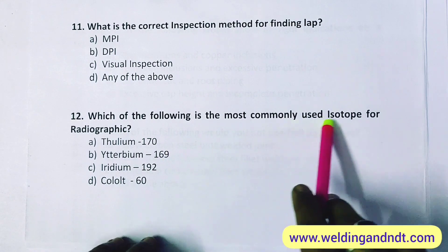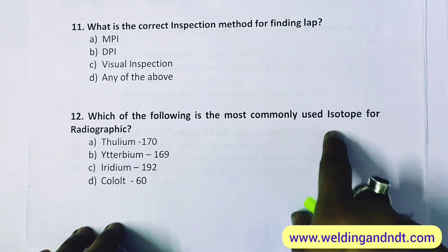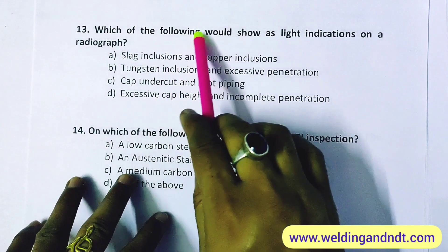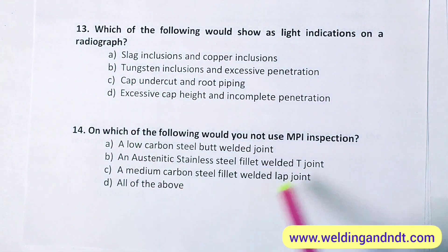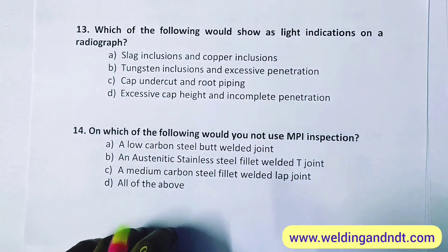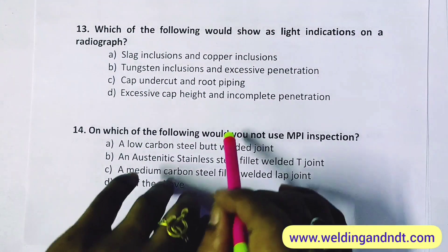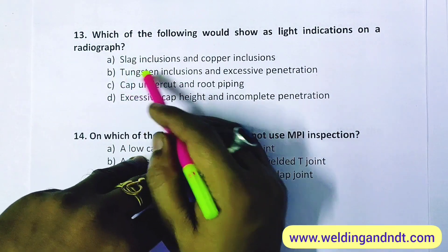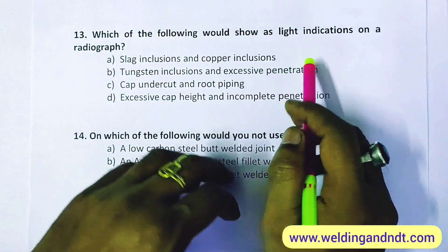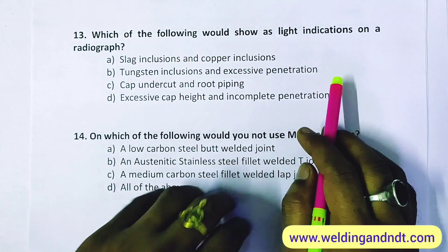Question 12: which is the most commonly used isotope for radiography? Iridium-192 is the most commonly used isotope in the industry. Answer is C — Iridium-192. Question 13: which of the following would show as light indications on a radiograph? Greater density indications show as light indications. Tungsten inclusion has greater density than base metal, and excessive penetration also results in greater density in that area. So the answer is B — tungsten inclusion and excessive penetration.